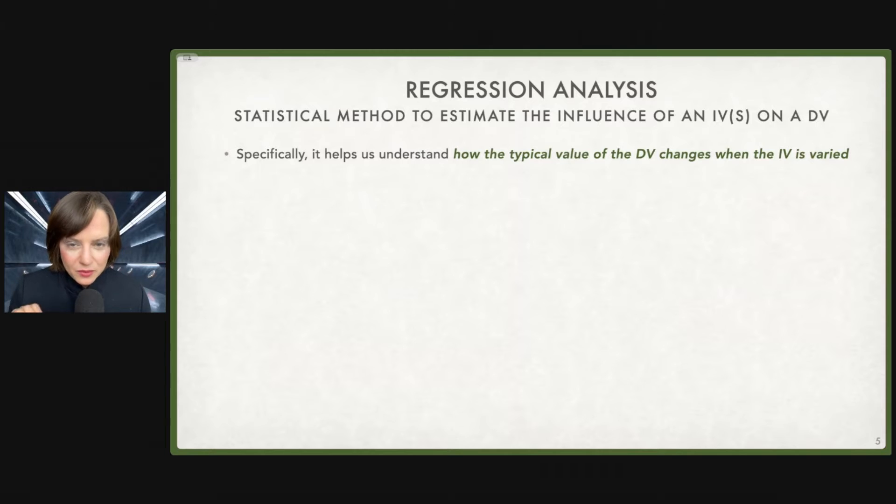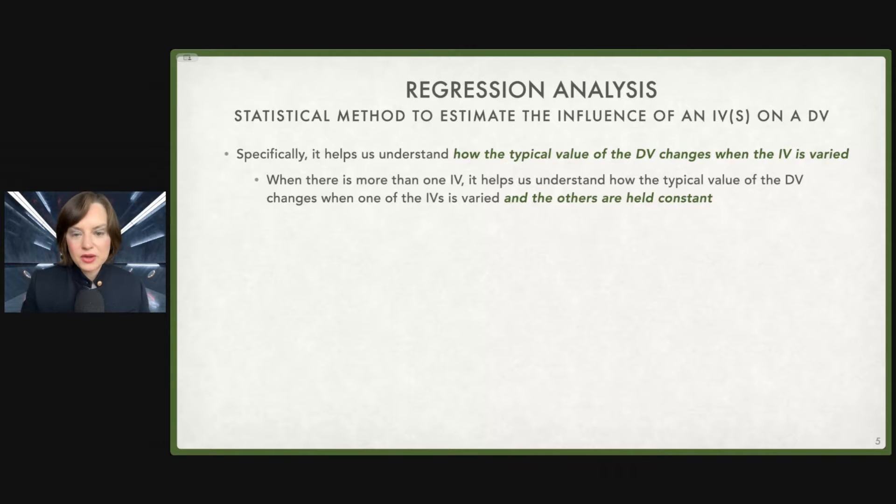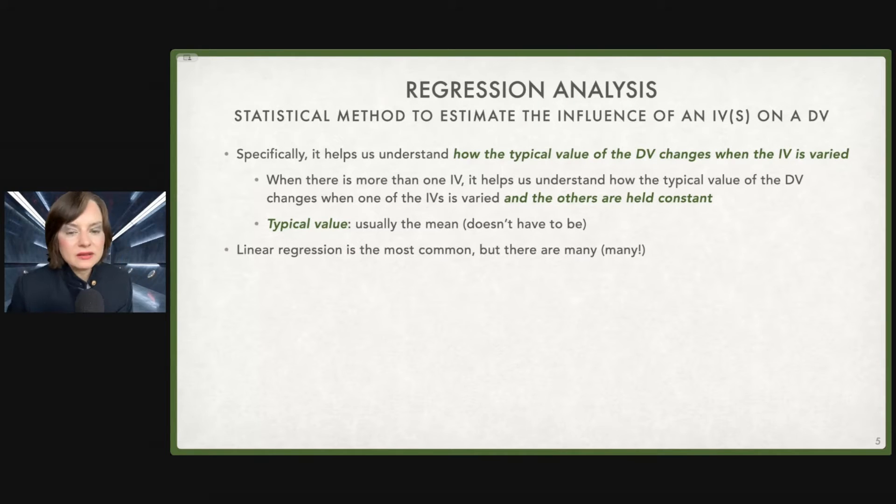So this line is telling us the predicted value of Y given X. More specifically, we are understanding how the typical value of the dependent variable changes when the independent variable is varied. When there's more than one independent variable, we are understanding how the typical value changes as we vary one independent variable holding all the others constant. Typical value is usually the mean, but it doesn't have to be.